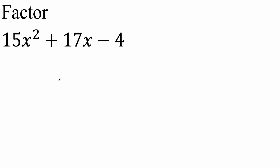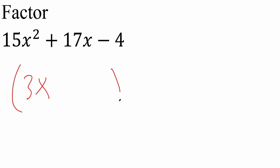With this problem I'm going to solve it mentally using the trial and error approach. Here we have a 15x squared, and there's two ways to get that: x times 15x, and 3x times 5x. This method is called trial and error in that we have to try something, so let's just try 3x and 5x.